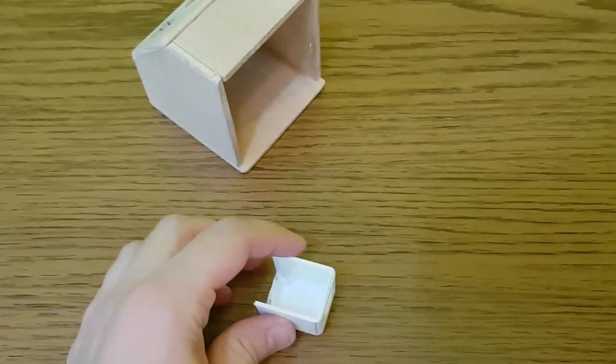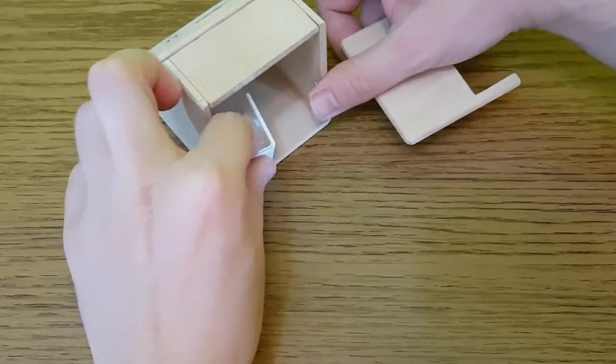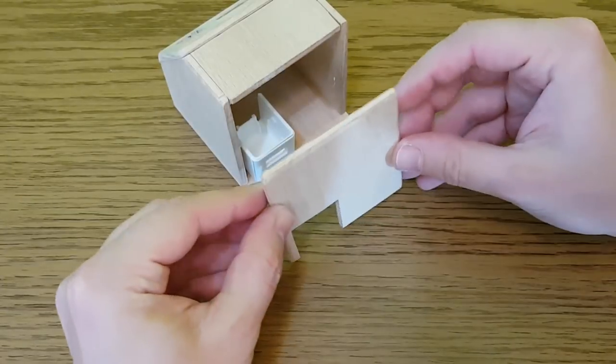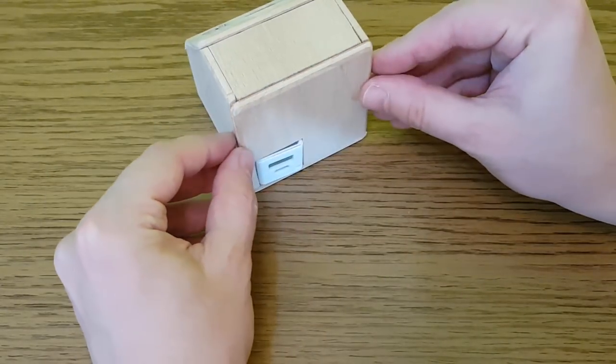The front of the power bank can be cut off and used as a support for the charging module. I've already cut the necessary hole in the back of the voltmeter box.